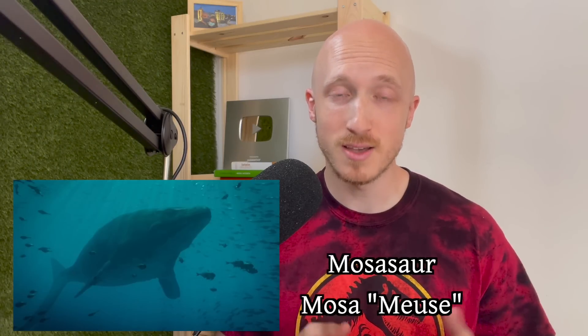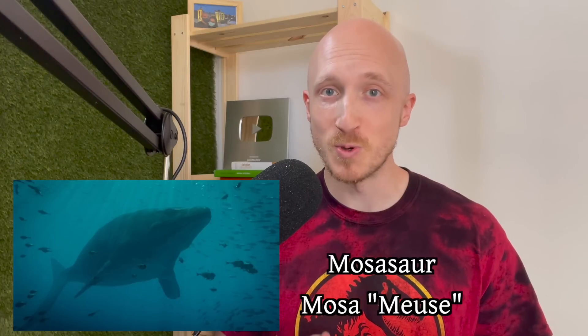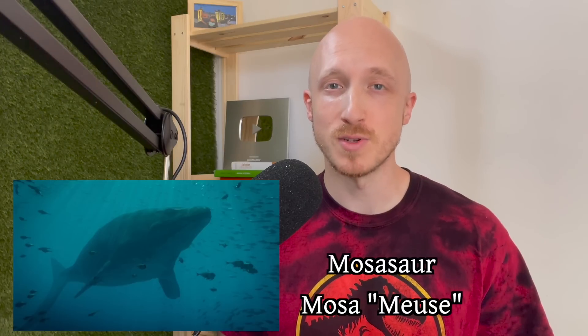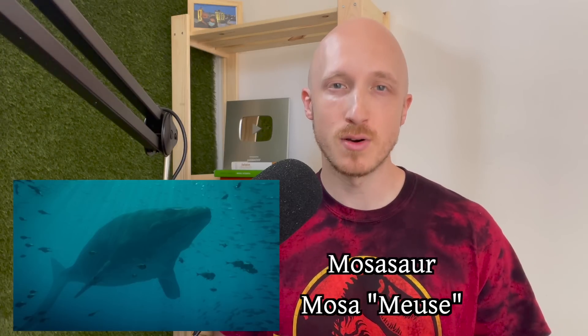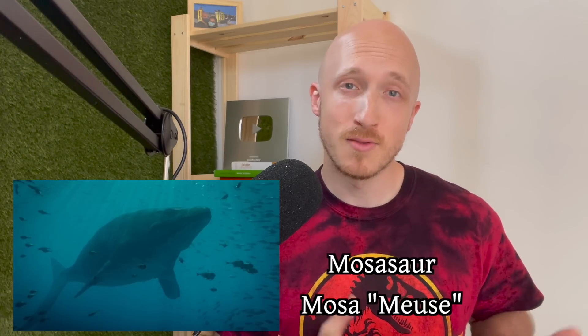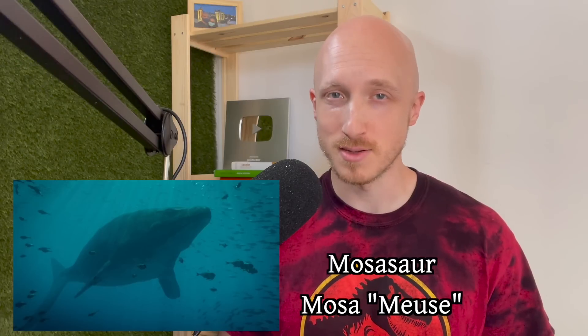The next animal we see is a Mosasaur. Mosasaur comes from 'Mossa', which is the Latin name for the Meuse River — a river in Northern Europe that flows from France through Belgium and the Netherlands.